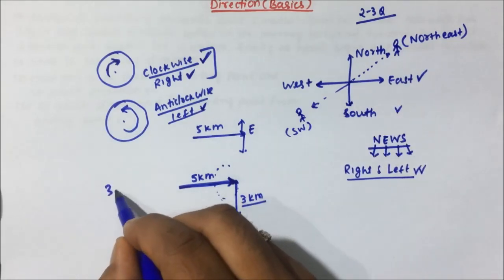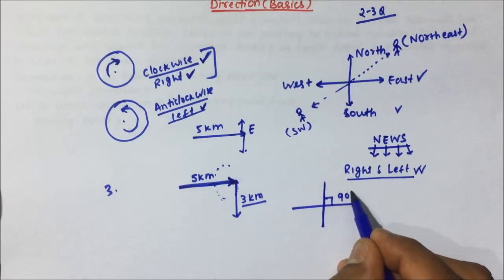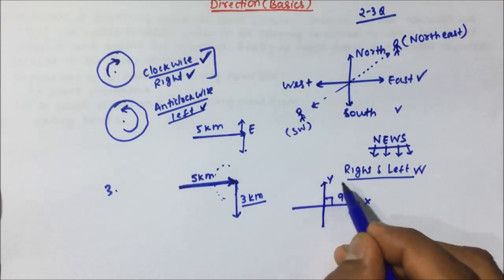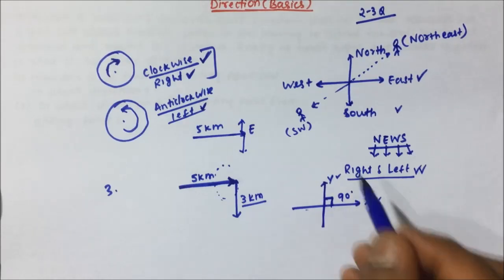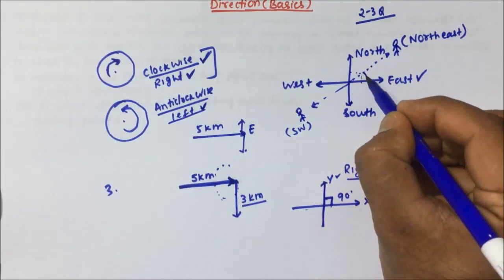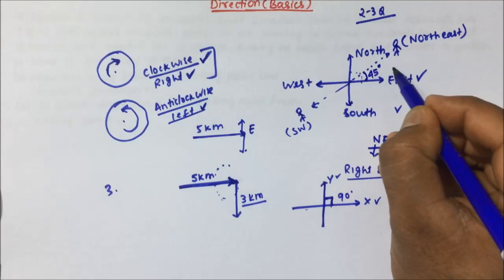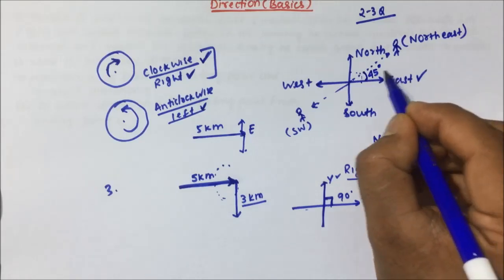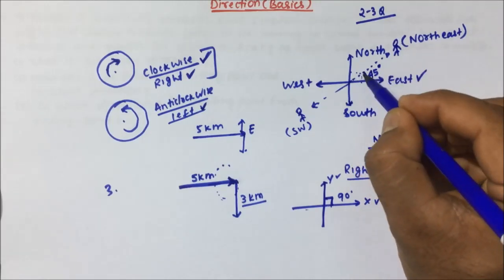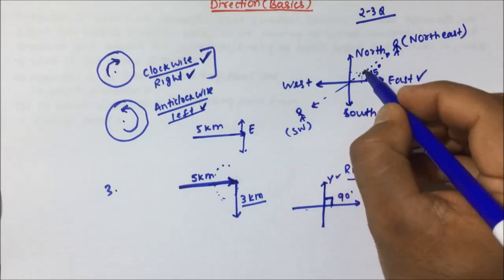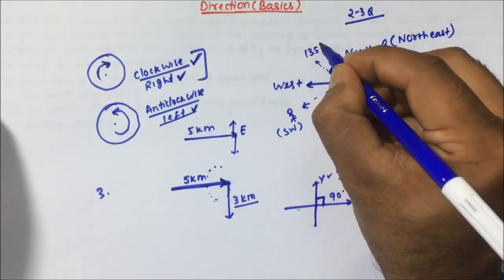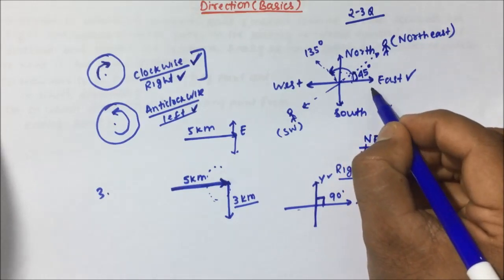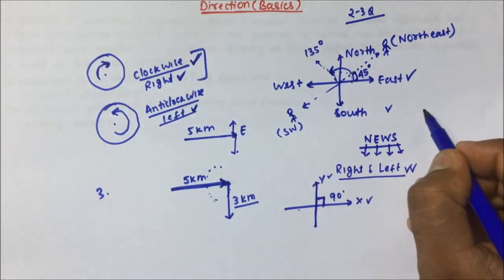Now the third concept is with respect to angles. If two lines are perpendicular to each other, then the angle made by x and y will be equal to 90 degrees. So this total angle will be 90 degrees. If we talk about the half angle, then it will be 45 degrees, because many questions will be asked on the basis of angles. So this person will be at a 45 degree angle. If a person is positioned further, then I can say the person is making a 135 degree angle from east. Like this we will be able to solve questions related to angles.